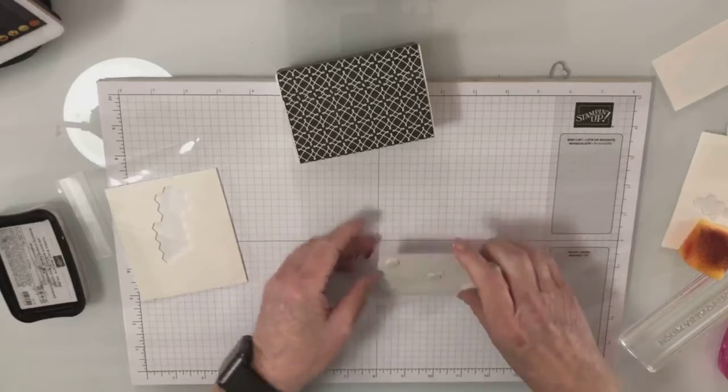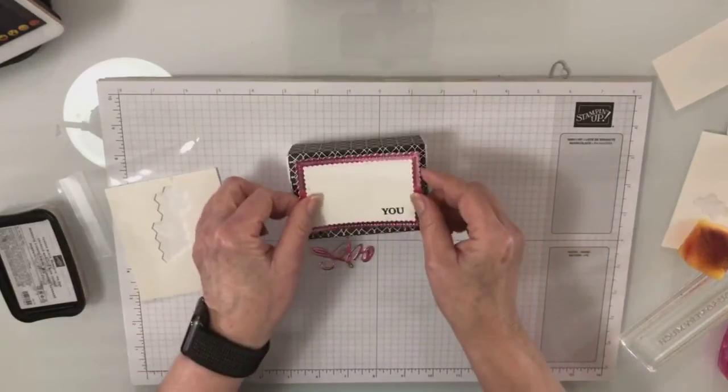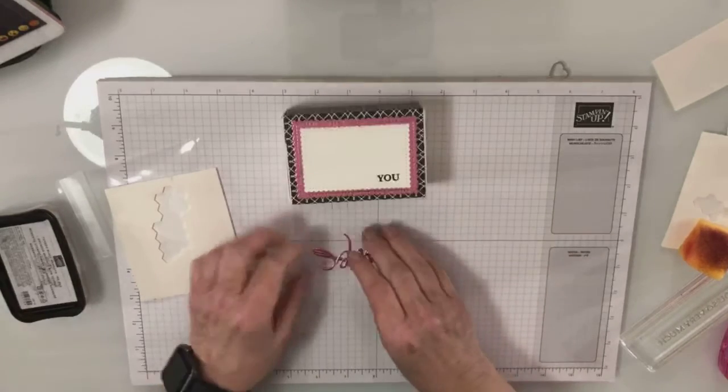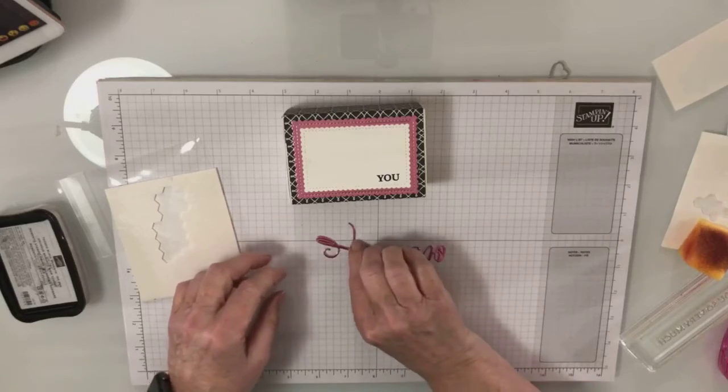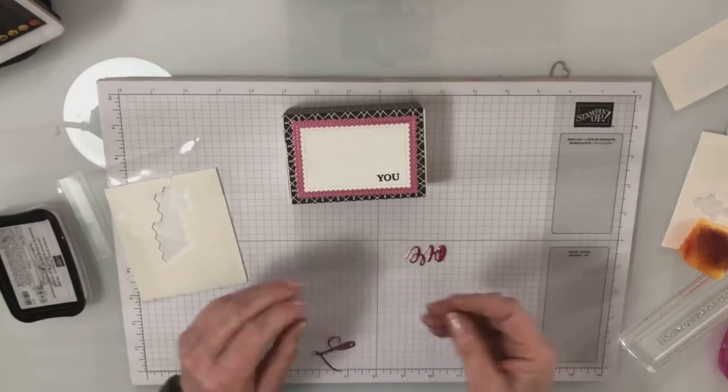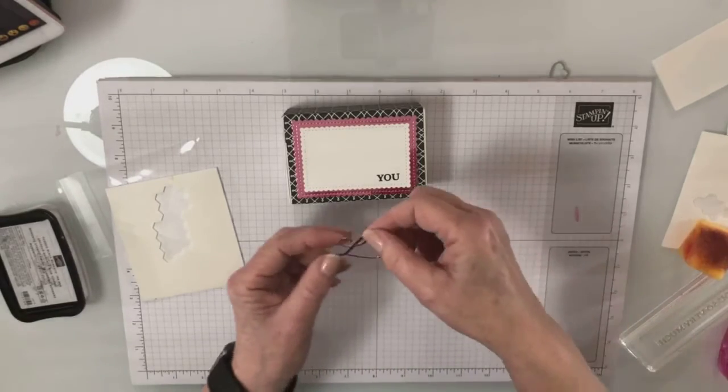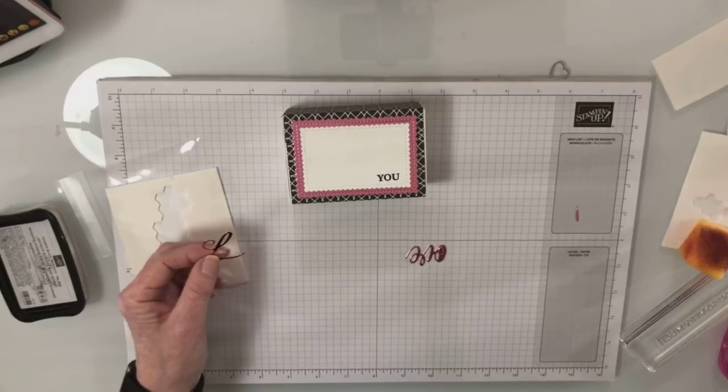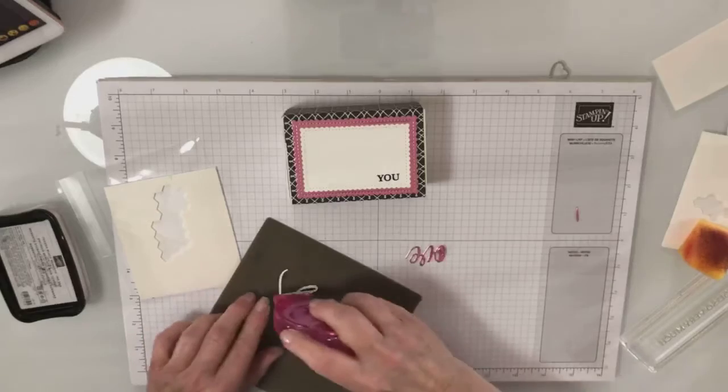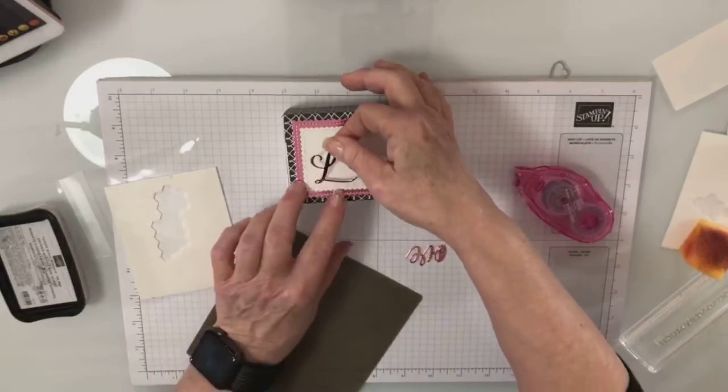I'll take them all off. Did I take them all off? That's always the question. Okay, so that's off. We're just going to center that right on there. Then I have the word love which you'll need to cut out of your dies. Cut it out of the Rococo Rose foil paper.